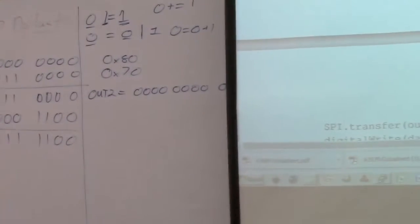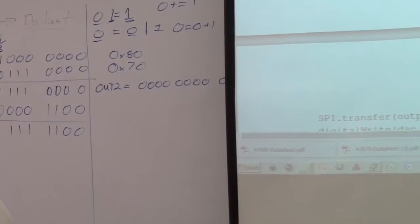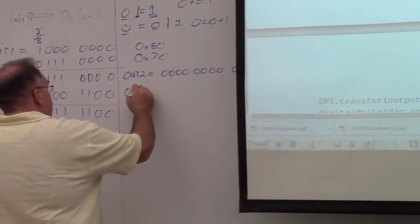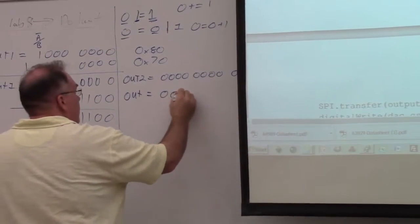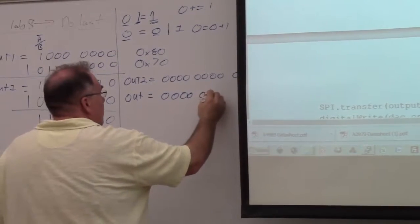Output 2 is now equal to that. So this first line was 0, 0, 0, 0, 0, 0, 0, 1, 1.